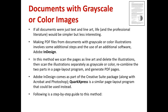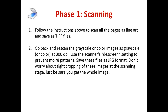Here is a step-by-step guide to this method. Phase one, scanning: we scan all the pages as line art and save them as TIFF. Then we go back and re-scan the grayscale or color images as grayscale or color at 300 dpi. We use the scanner's descreen function — sometimes called the rescreen setting — to prevent moiré patterns, and save these files as JPEG. Don't worry about tight cropping the images at the scanning stage — we're going to crop them properly when we open them in Photoshop.